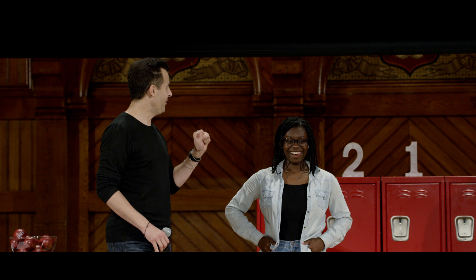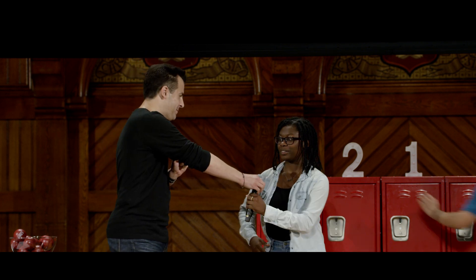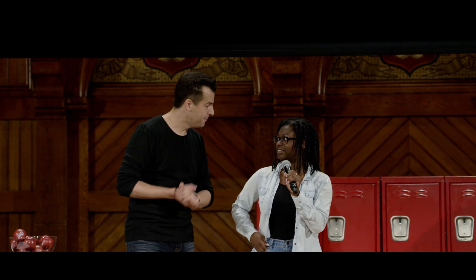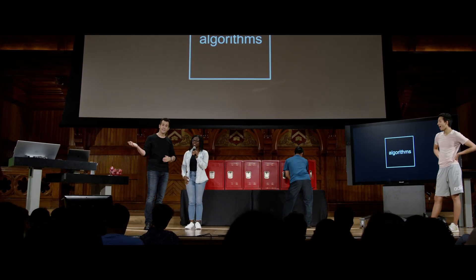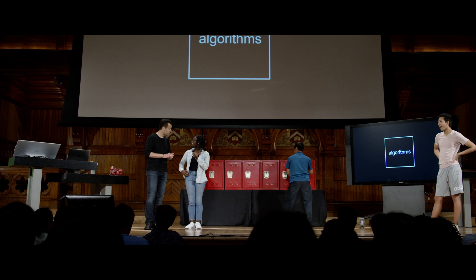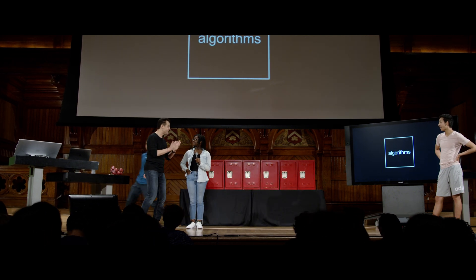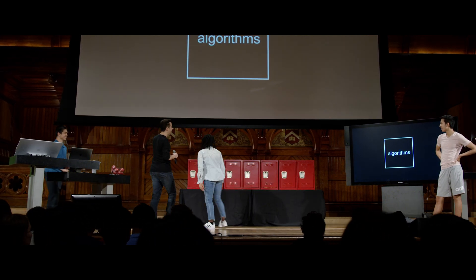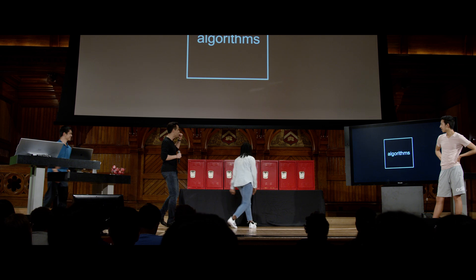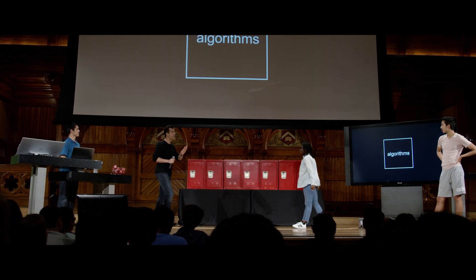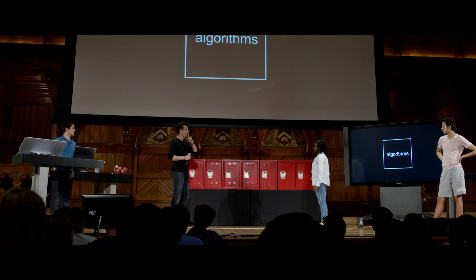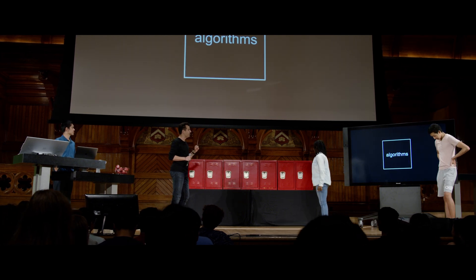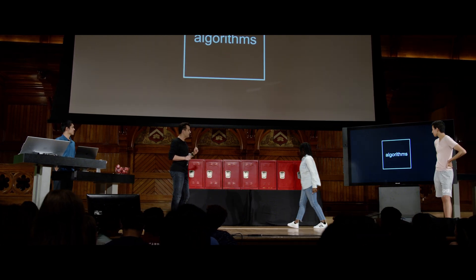DAVID MALAN: Brian's back now. Would you like to introduce yourself? I'm Nazari. And what year are you? I'm a high school student, a senior. Wonderful. And what school? Cambridge and Latin, just down the road. So glad you could join us here today. Now we have seven lockers here behind you, and the goal is still to find the number 50 — but I'm going to tell you that the numbers are sorted. So what's going to be your algorithm, if not the same as Eric?